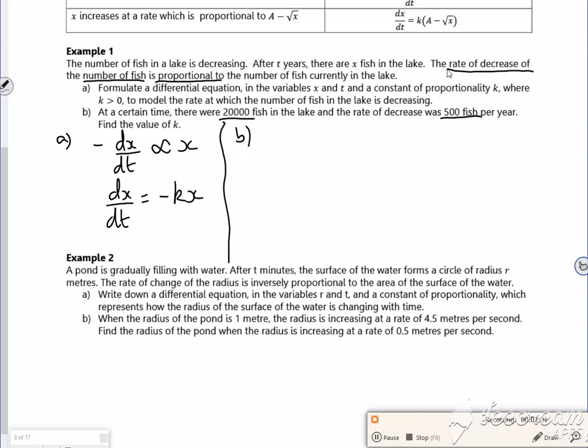So we know when x is 20,000, the rate of decrease, dx/dt, is minus 500. I've got that information. I can use this to find k.